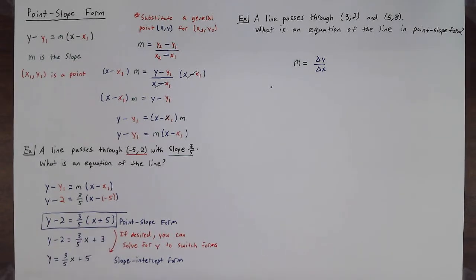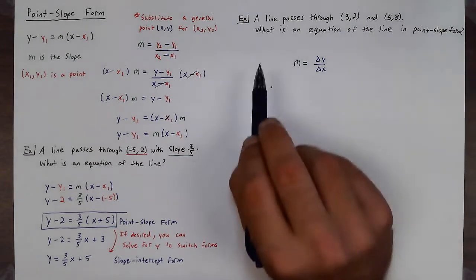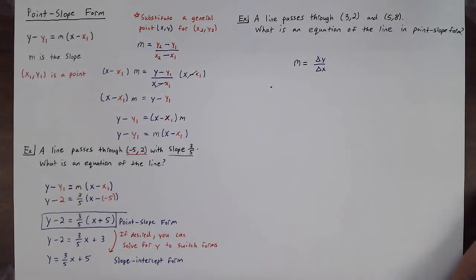You could have stopped earlier. Now a line that passes through three, two and five, eight. What is an equation of the line in point-slope form?